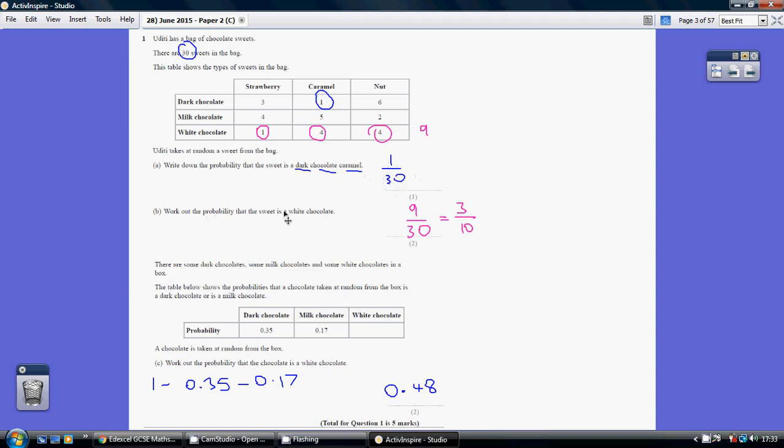Now part B, work out the probability that the sweet is a white chocolate sweet. Well, these are all the white chocolate sweets. Some of them are strawberries, some are caramel, some are nuts, but they're still all white chocolate, so there are nine of those in total, nine out of thirty. That would give you full marks, but you can simplify that to three out of ten.